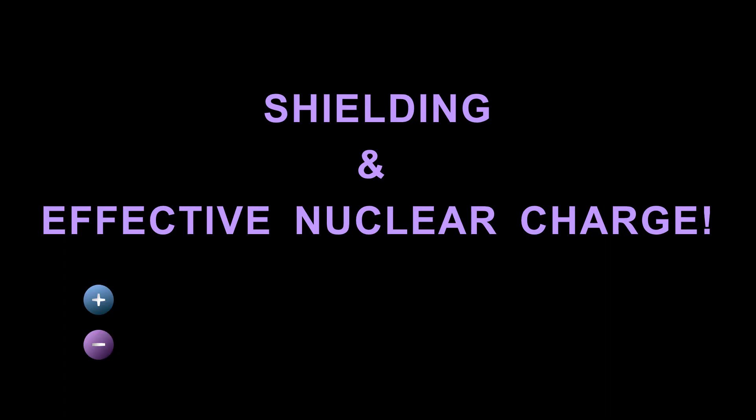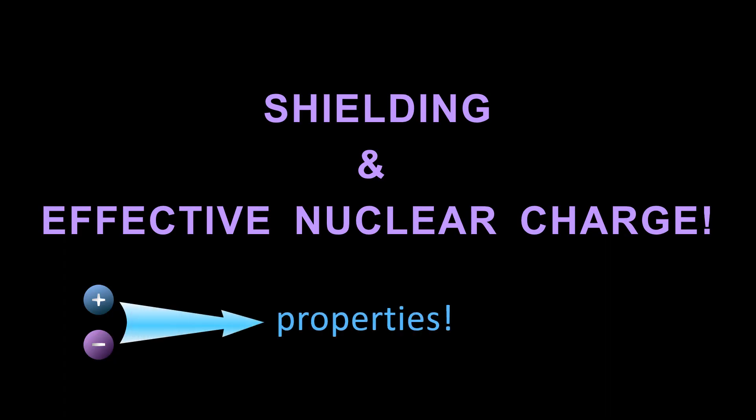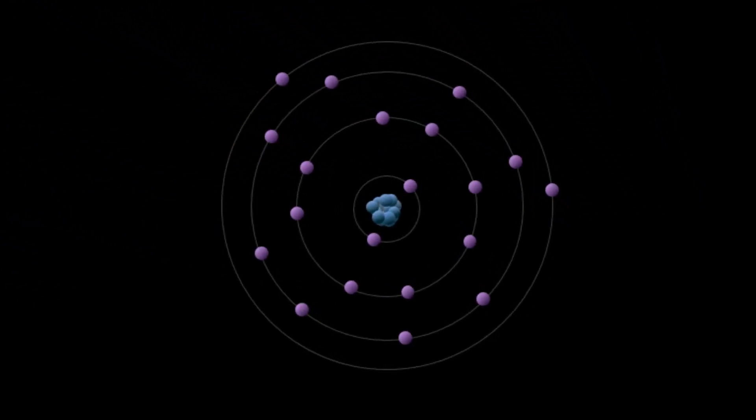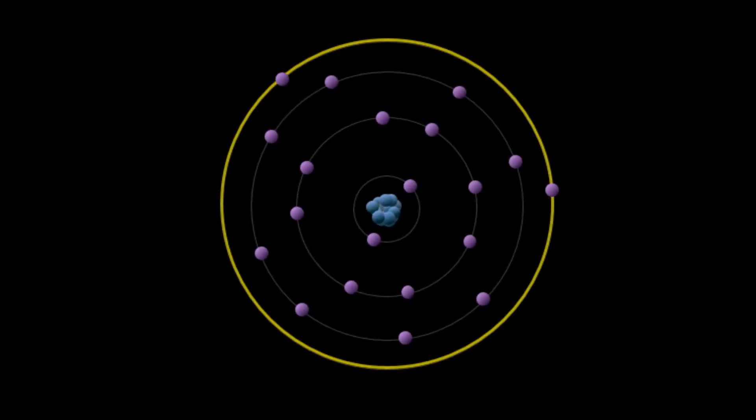Today's video is about shielding and effective nuclear charge. Shielding and effective nuclear charge are, in a sense, two sides of the same coin. They give us a model to understand how the behavior of atoms derives from the interplay of positive and negative particles in the atom — what we call atomic properties. More specifically, shielding and effective nuclear charge refer to how this interplay affects the valence electron shell, since that is primarily where chemistry occurs.